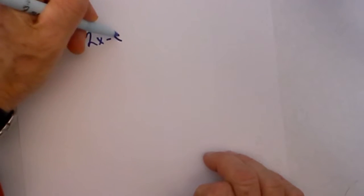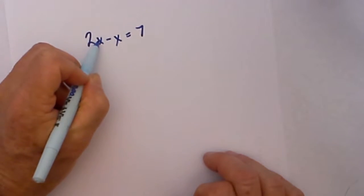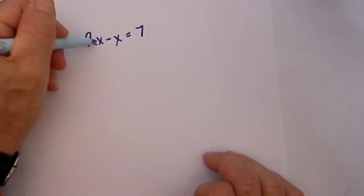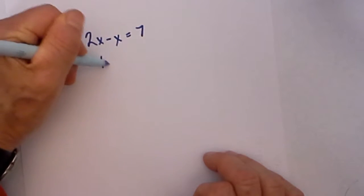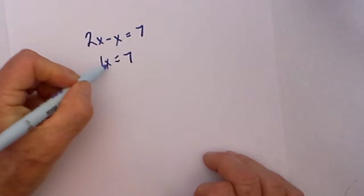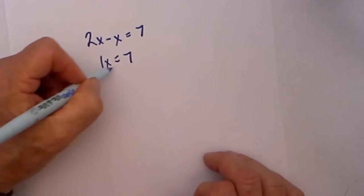Let's go ahead and answer this question. We have 2x minus x equals 7. Whenever you have like terms, you can subtract the x so that becomes 2x minus x is equal to 1x. Normally you would just write that as x, but I wanted to place the 1 so we can see.